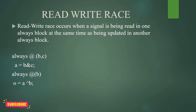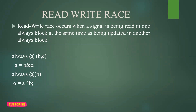Next is read and write race. A read-write race occurs when a signal is being read and also written in the same code across always blocks. For example, in one always block b and c are assigned to a, while in another always block a and x are used to compute o. Both are happening in the same code, which is not a correct way of writing the code.